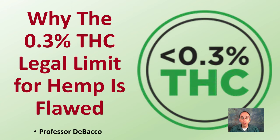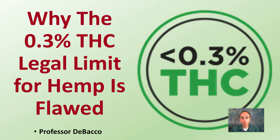In this Debaco University video, I want to go over something that many people probably recognize: the 0.3% THC legal level and the distinction between marijuana and hemp. I'm going to talk about why that 0.3% THC legal limit for hemp is technically flawed, looking at the original data that was used as part of the study, as well as some new data.